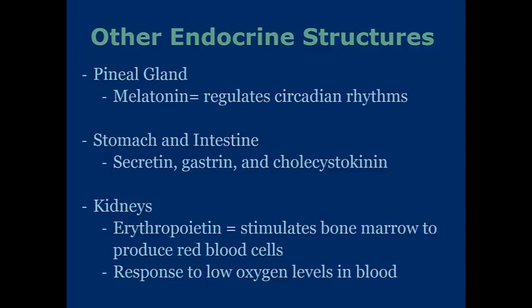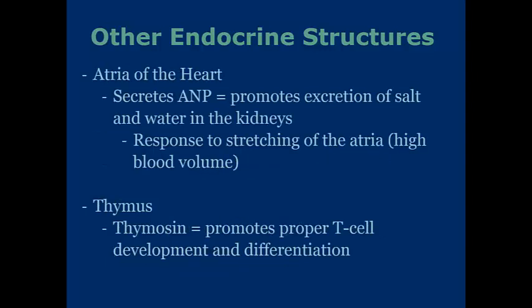The stomach and intestines release secretin, gastrin, and cholecystokinin, all involved in the digestion response when we eat. The kidneys release erythropoietin, which stimulates bone marrow to produce red blood cells — this occurs when the kidneys detect low oxygen levels in the blood being filtered. The atria of the heart secrete ANP, which promotes excretion of salt and water by the kidneys when the atria stretches beyond normal capacity due to high blood volume, which is dangerous and can be fatal if untreated.